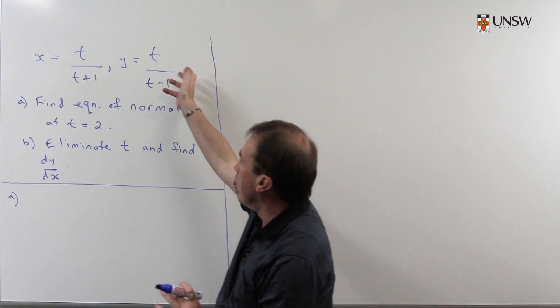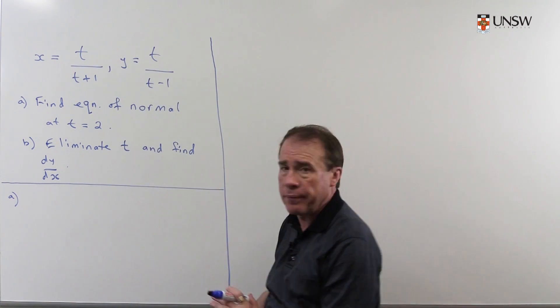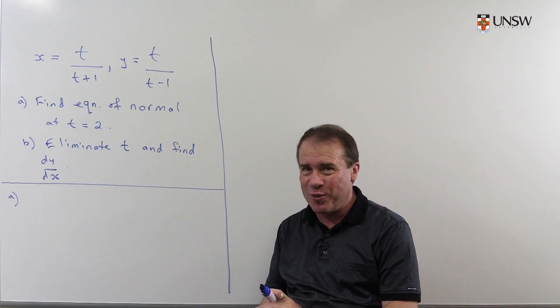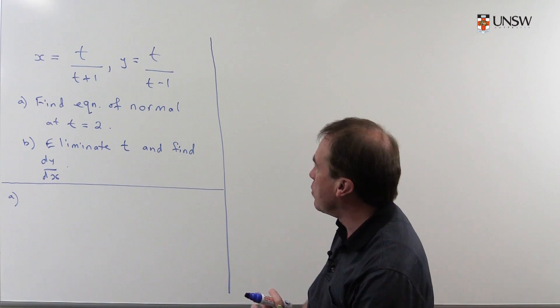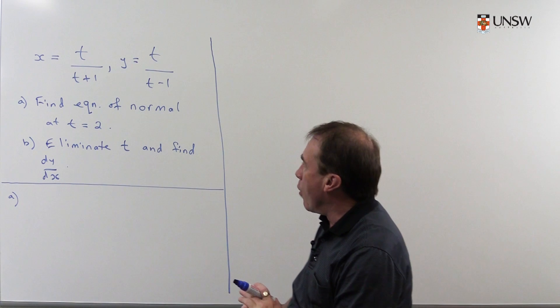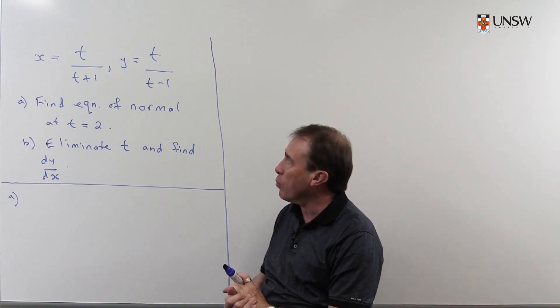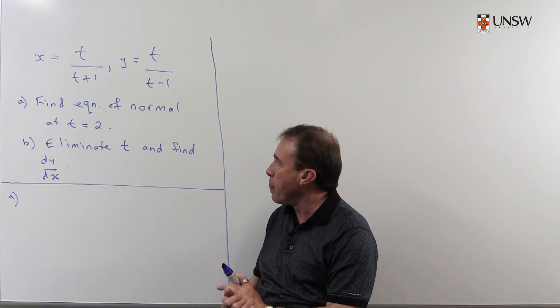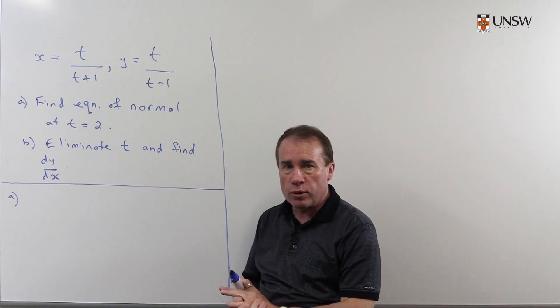So this represents some kind of curve in the plane. Not clear exactly what the curve would look like. That would be harder to draw. Probably in this case, I'd use Maple to draw this for me. I want to find the equation of the normal to this curve at the value t equals 2.